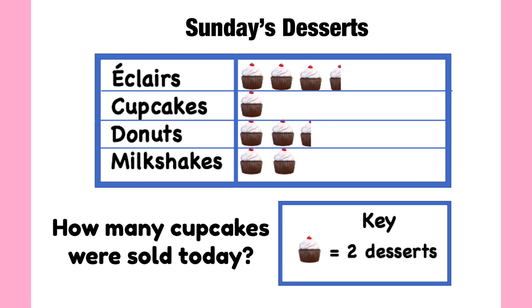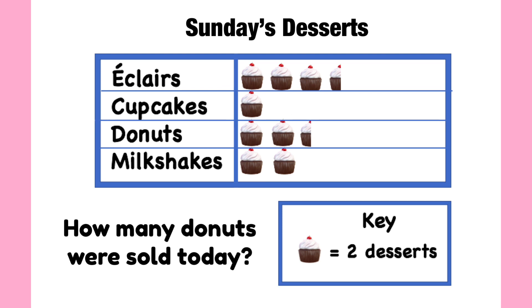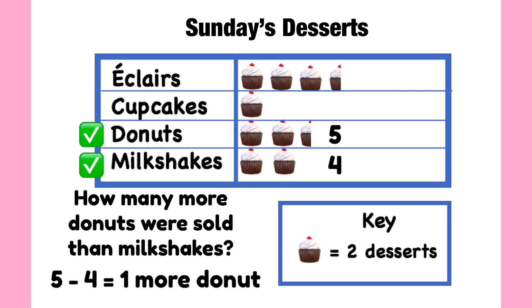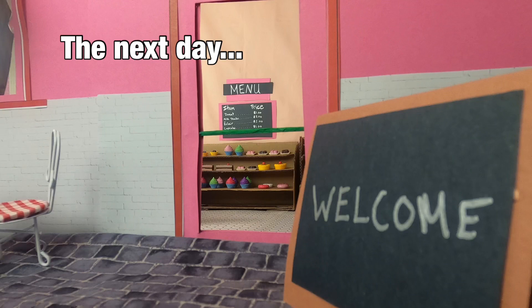How many cupcakes were sold today? Two cupcakes were sold today. How many donuts were sold today? Five donuts were sold today. How many more donuts were sold than milkshakes? Five minus four equals one more donut. Do you get the picture? Got it.